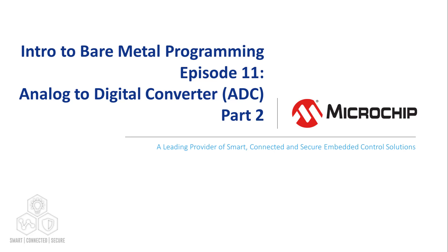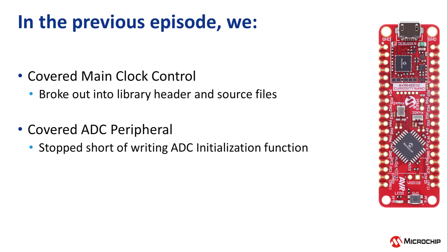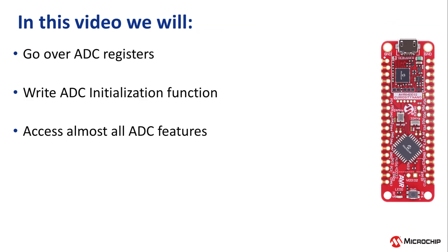Hi everyone, Ross Satchell from Microchip back again. Welcome to episode 11 in our AVR Bare Metal series. In the previous video, we went over how I created a main clock control header and source file that can be reused in other projects. We also went over the ADC peripheral, but stopped short of writing an ADC initialization function. In this video, we will go over the registers that are needed for using the ADC, and then write an initialization function that gives us access to almost all of the features of the ADC. So let's get started.